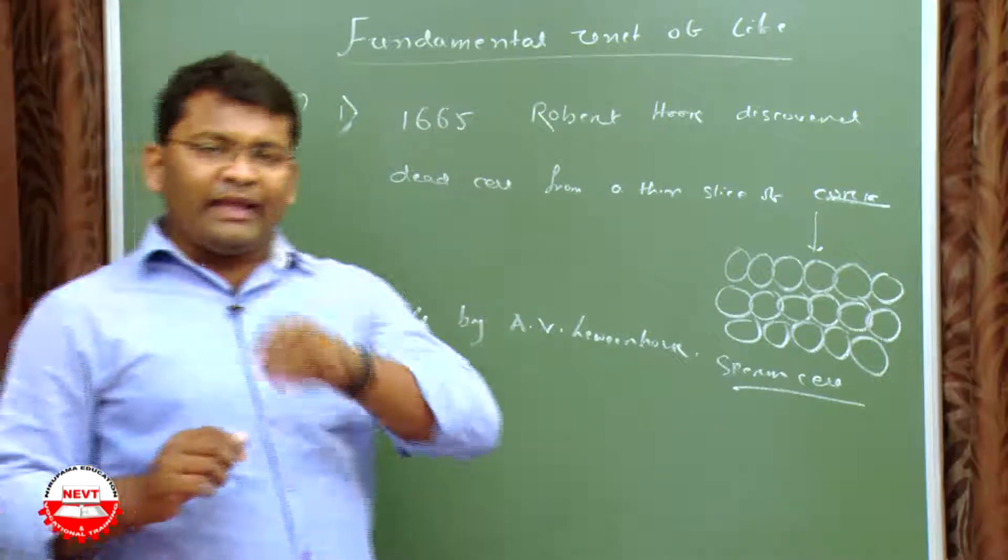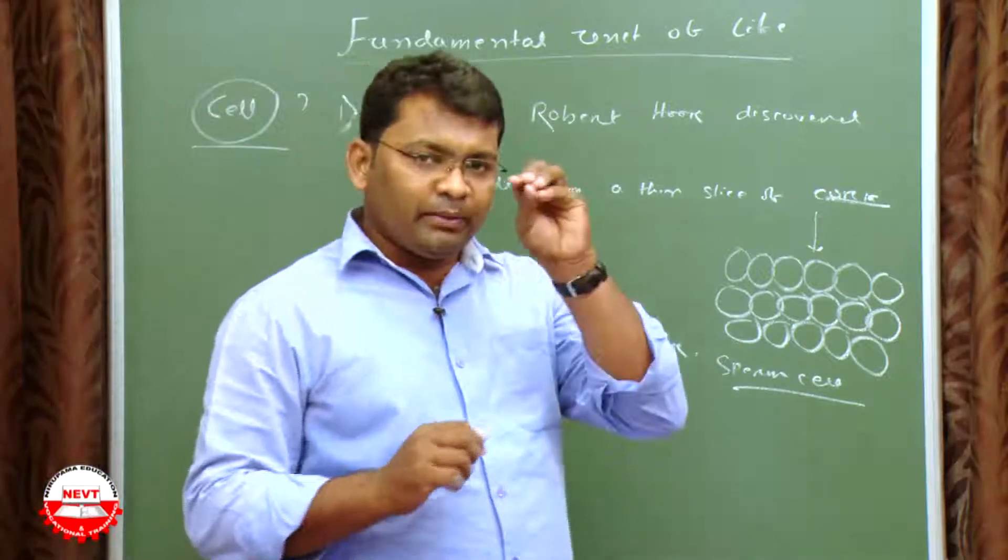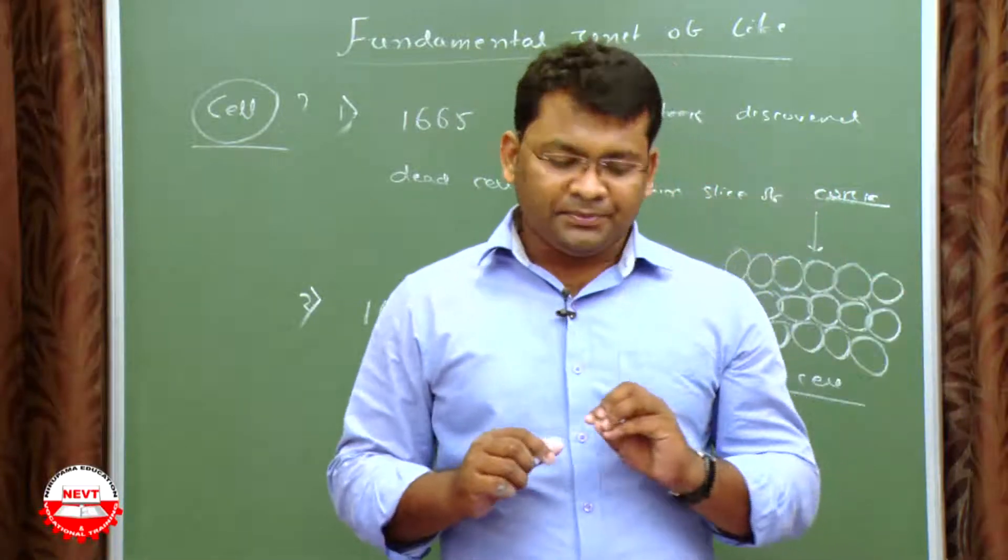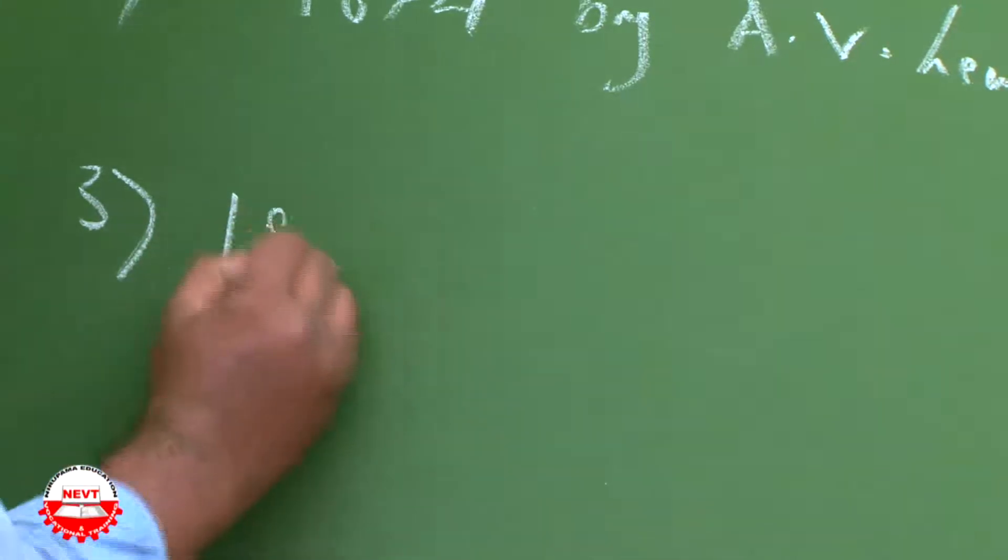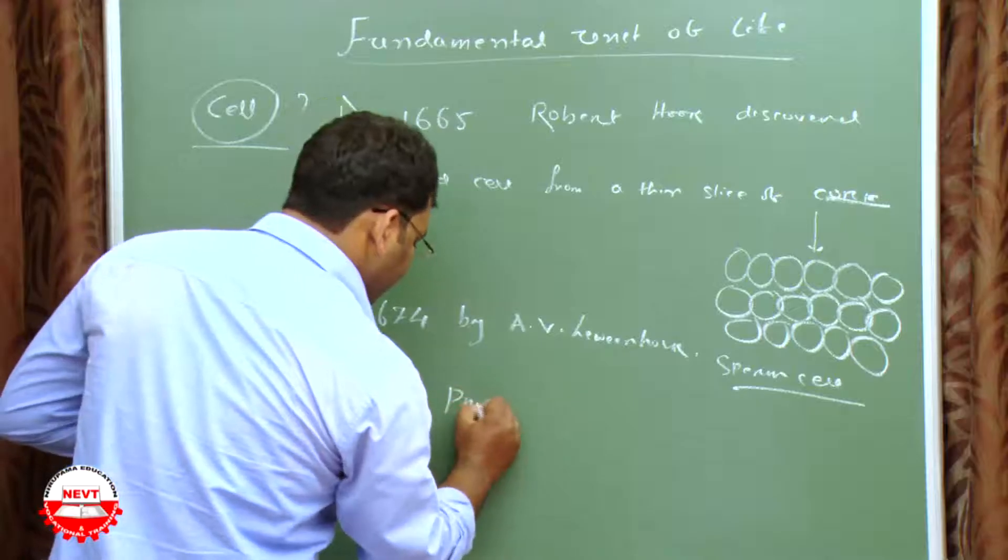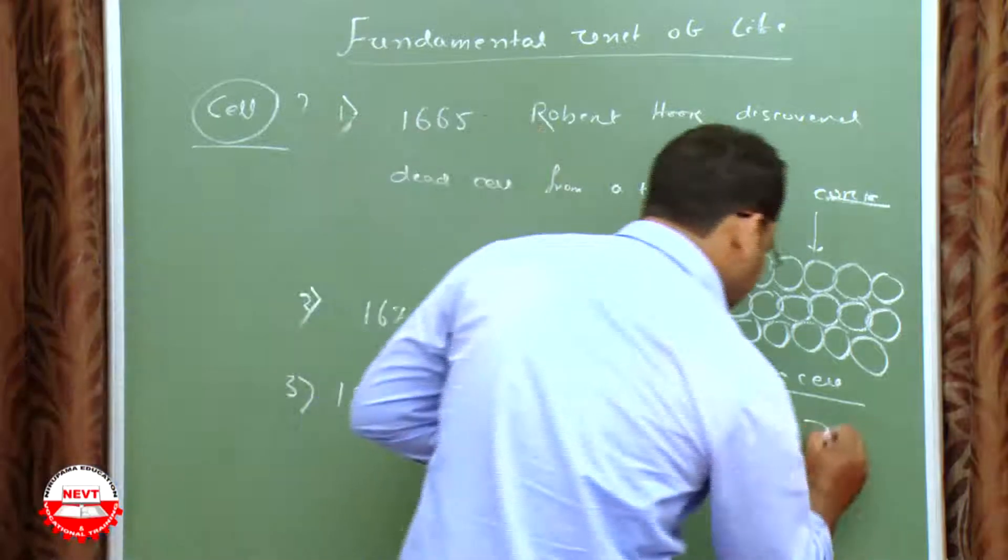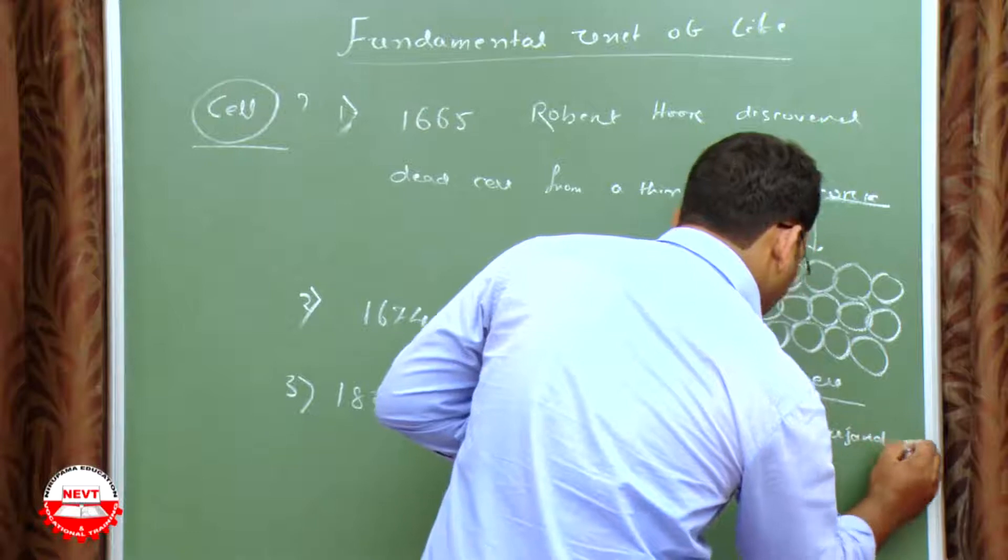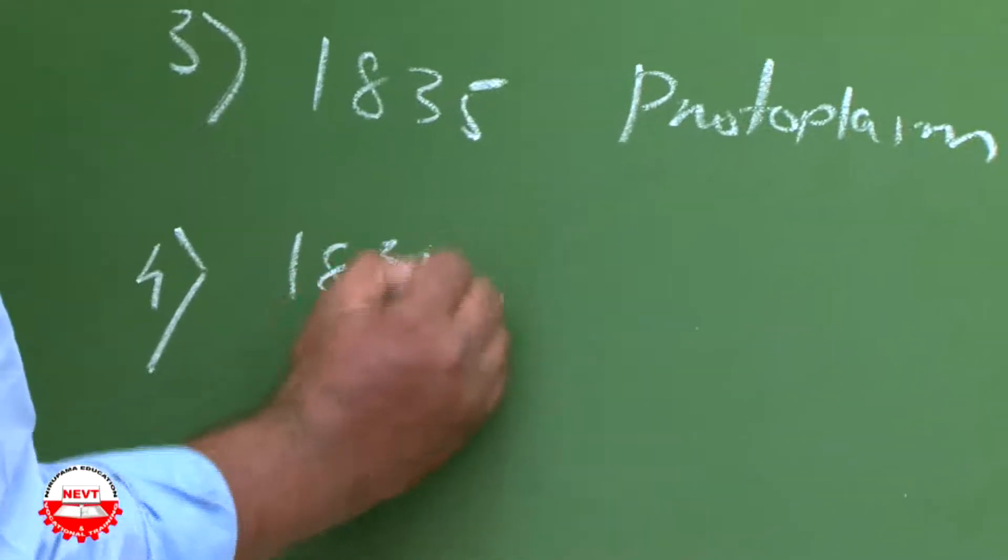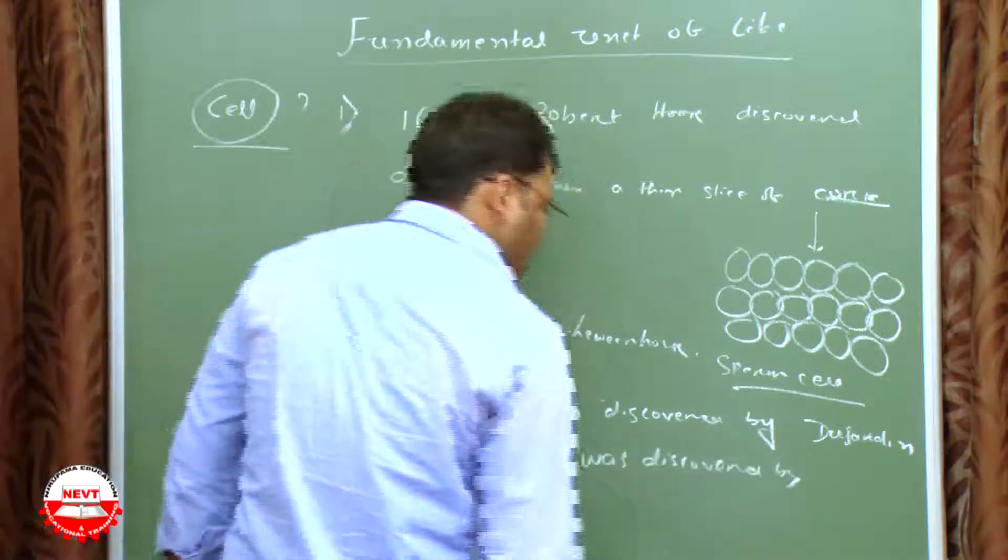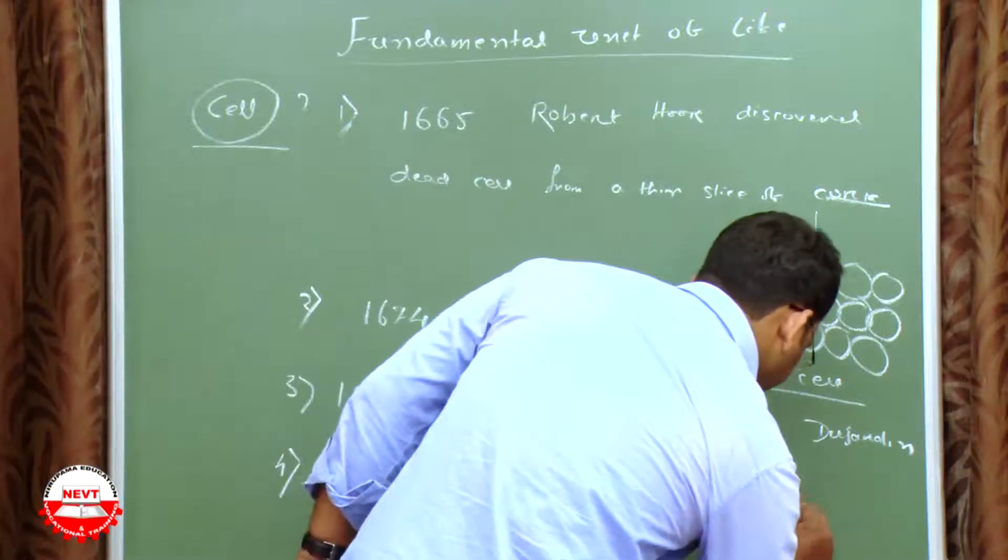Later, the cell contained a living part that is called the protoplasm, and it was discovered in 1835. Protoplasm was discovered by Dujardin. In 1831, nucleus was discovered by Robert Brown.